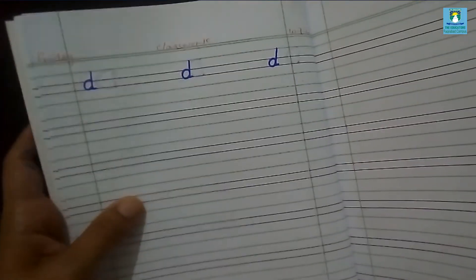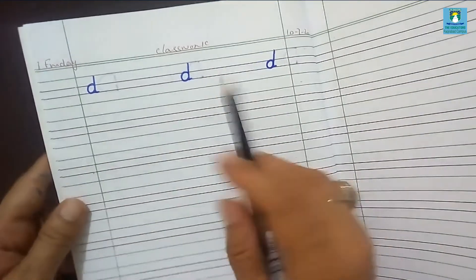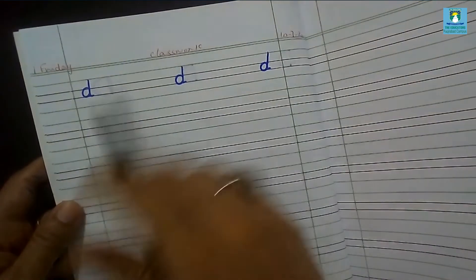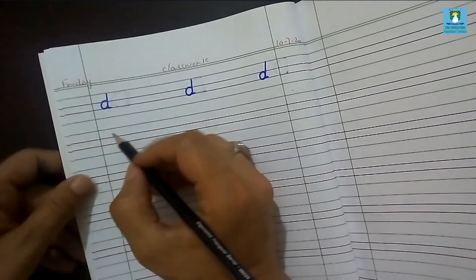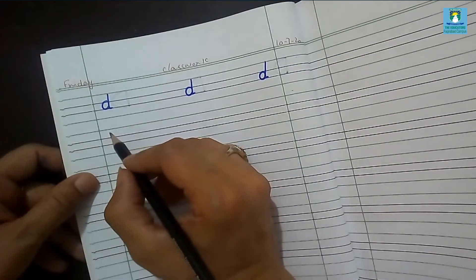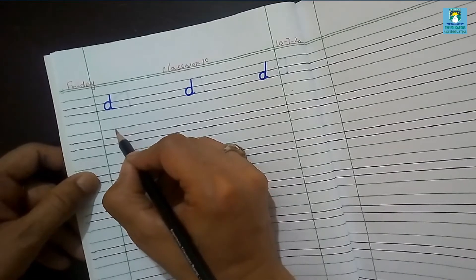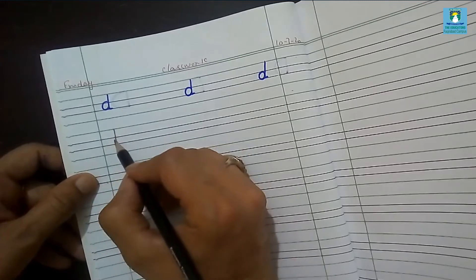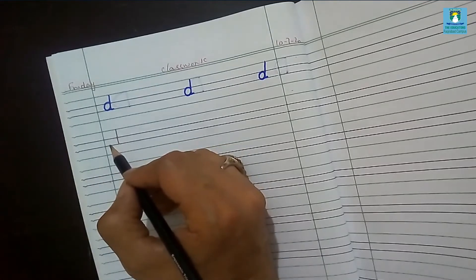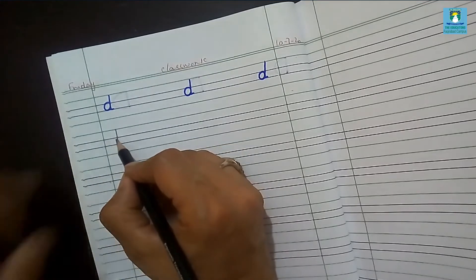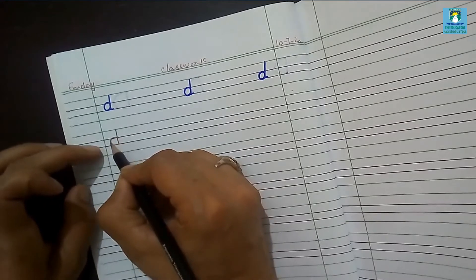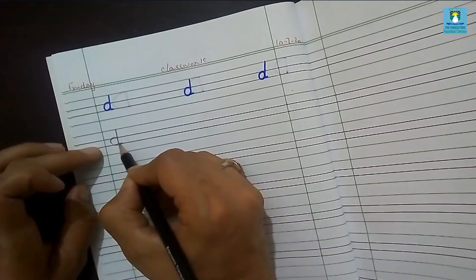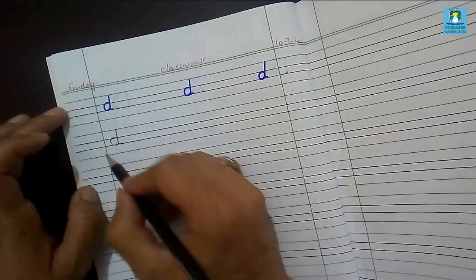Now turn the page. You will also write a small letter D on the next page. Prepare the page like me. How can we write a small letter D? You have to draw a line from the skyline to the grass line, then draw a curved line in the middle of two lines like this. It will become small D with a tail.